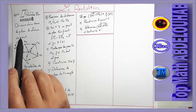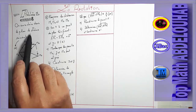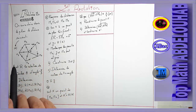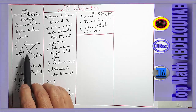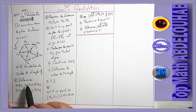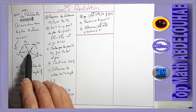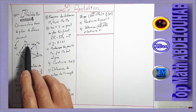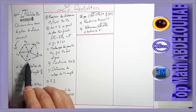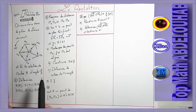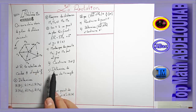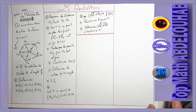On considère dans le plan le schéma suivant. Vous regardez où les points M1, M2, M3, M4, M5 — tous les triangles, bien sûr, sont équilatéraux.